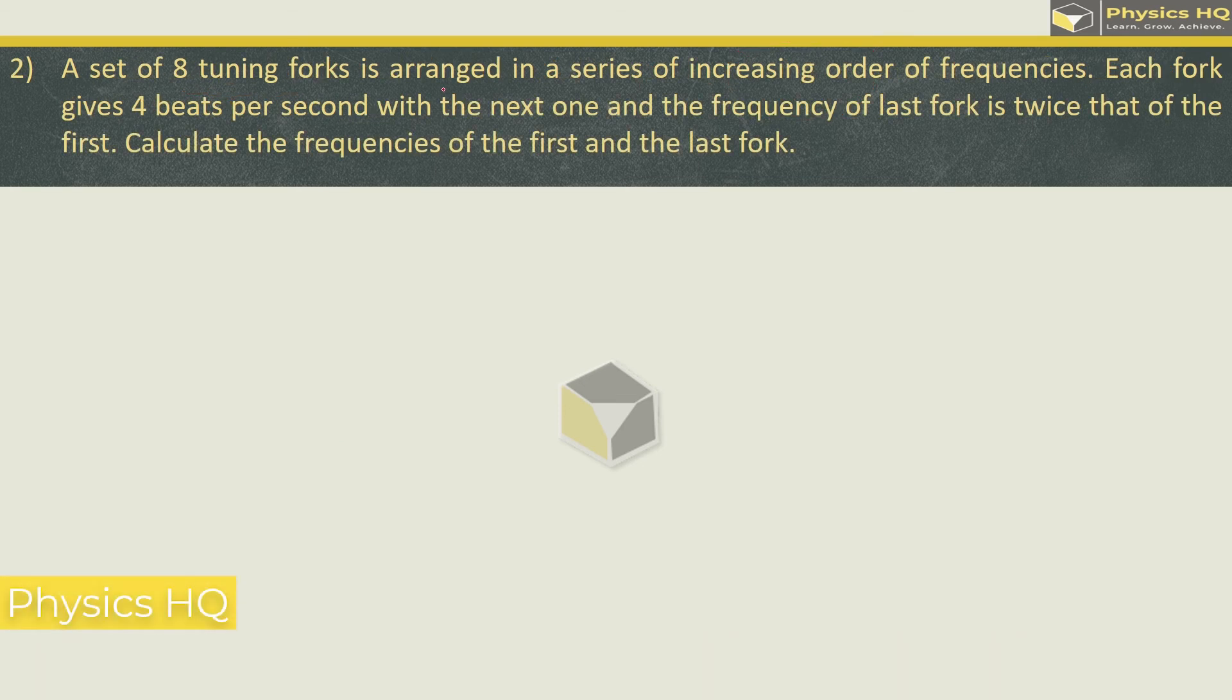A set of 8 tuning forks is arranged in a series of increasing order of frequencies. Each fork gives 4 beats per second with the next one, and the frequency of last fork is twice that of the first. Calculate the frequencies of first and last fork.